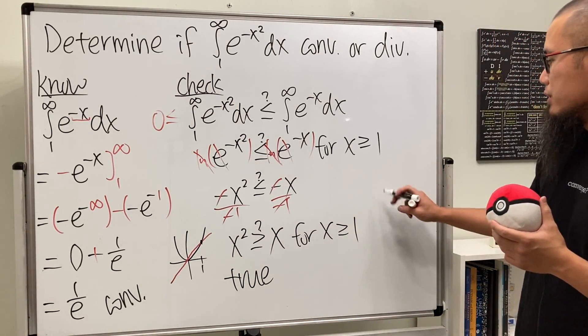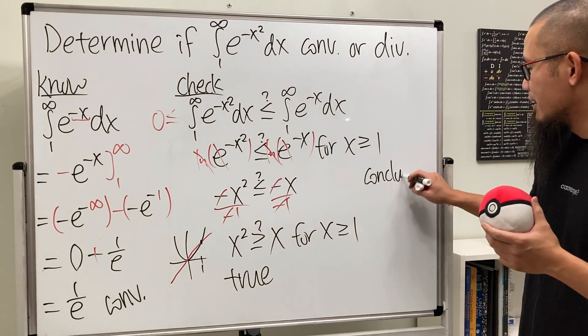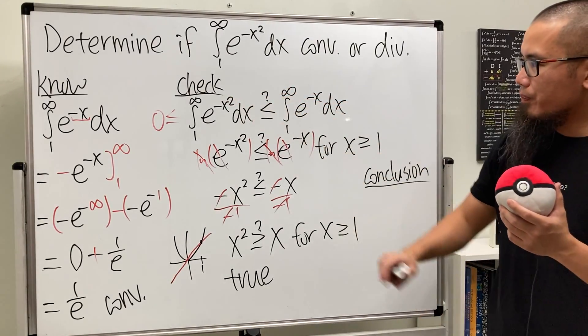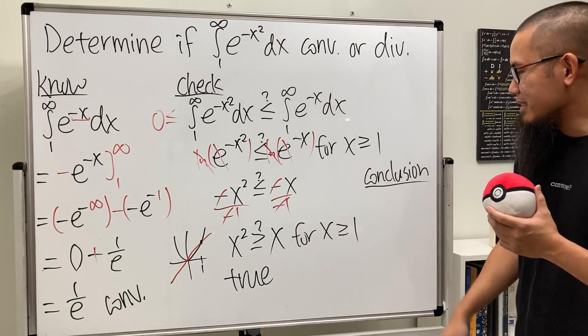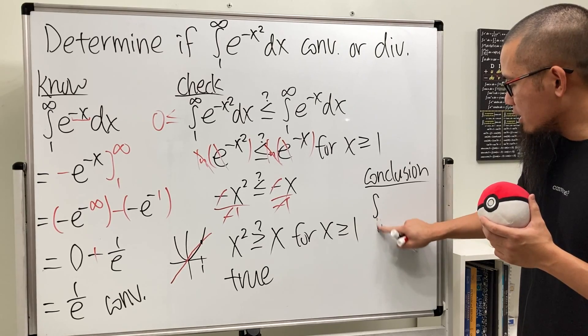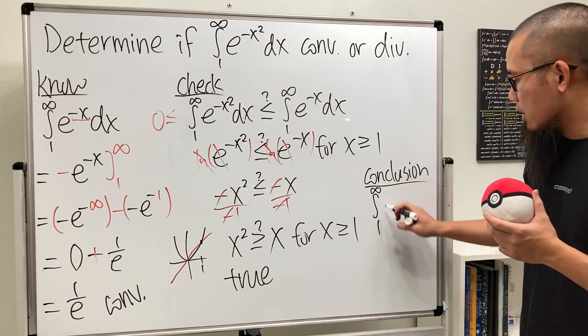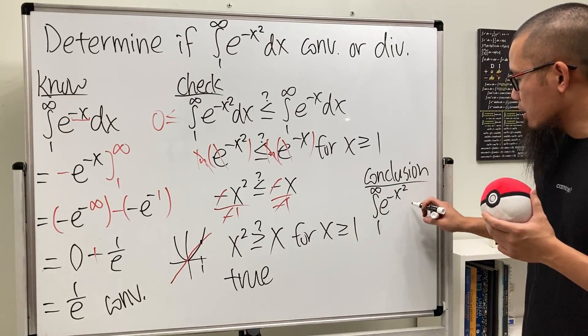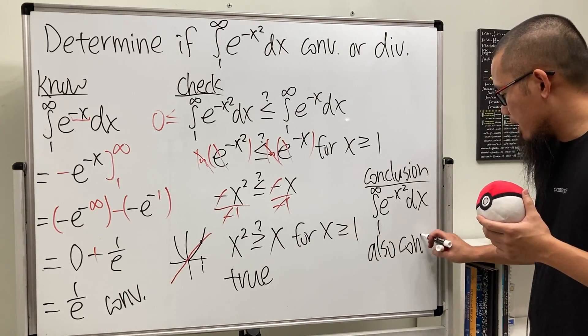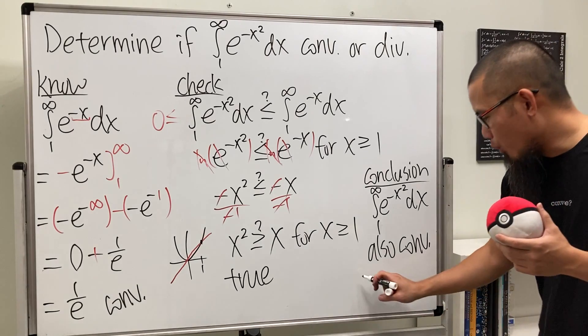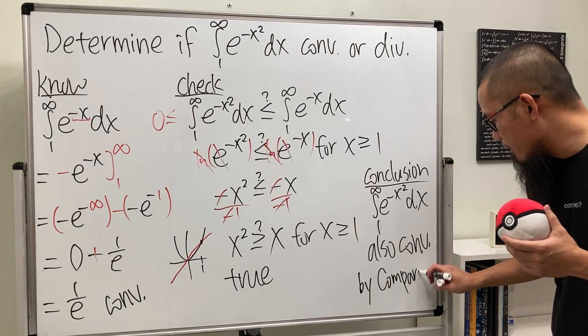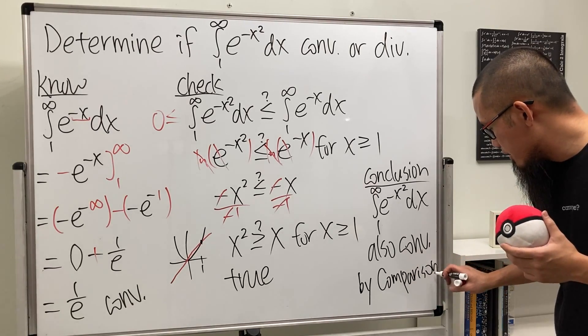And here, we can just say, here's the conclusion. Three steps. Put on what you know. Do the check. In the end, draw the conclusion. The conclusion is that the integral going from 1 to infinity of e to the negative x squared, this right here, also converges by the comparison test.